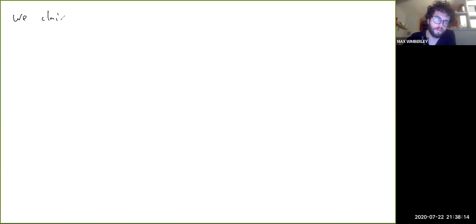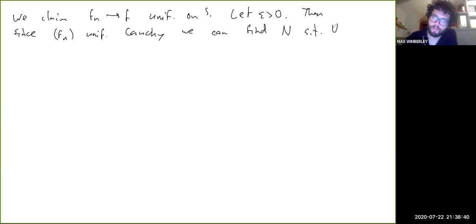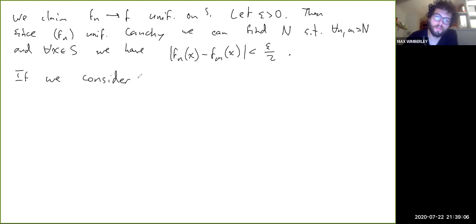So we claim fn converges to f uniformly on S. So we let epsilon be greater than zero. Then since fn is uniformly Cauchy, we can find capital N such that for all n and m greater than capital N and for all x in S we have absolute value of fn(x) minus fm(x) is less than epsilon over 2.